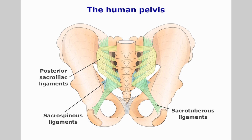They form a strong and stable joint capable of transferring forces from the lower extremities to the spine and vice versa. This joint is reinforced by the interosseous, posterior and anterior sacroiliac ligaments. Further stability is added by the iliolumbar, sacrotuberous and sacrospinous ligaments.